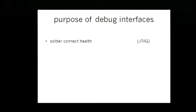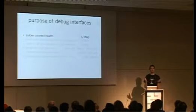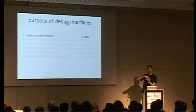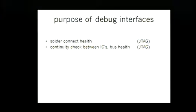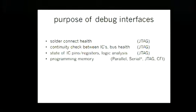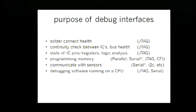An example of a leaky abstraction: here is a chip on a board with epoxy on top meant to make it hard to touch the pins, but on the bottom of the board all the vias are exposed. So first we're going to look at debug interfaces. JTAG might be used to check the health of solder connections, check the state of pins on the chip, program memory, or debug the actual processor. Serial and I2C are used to communicate with sensors.